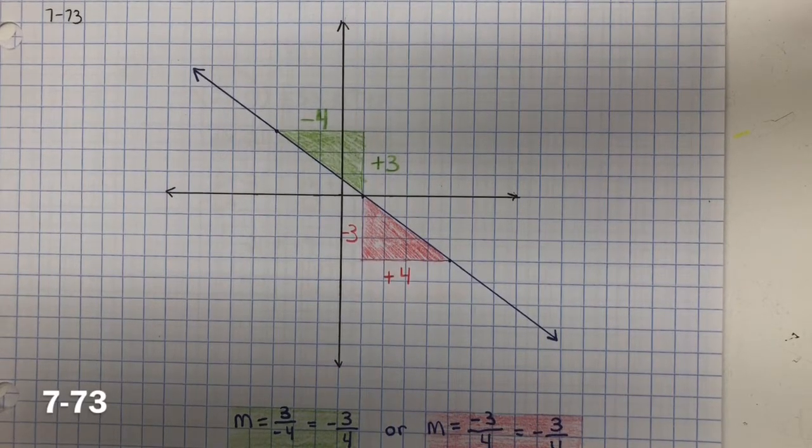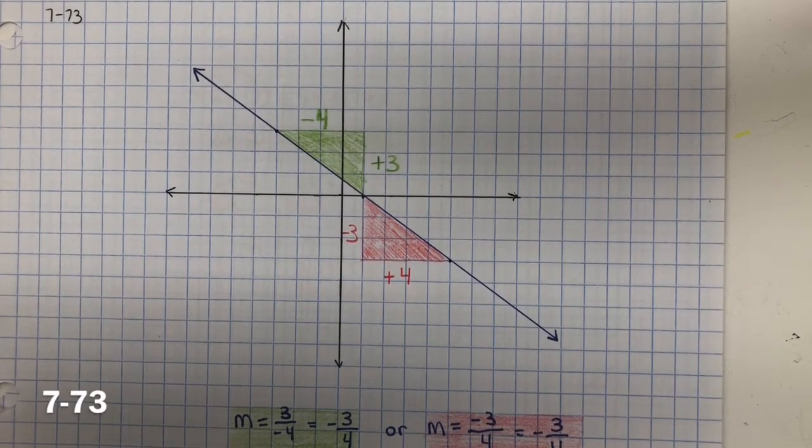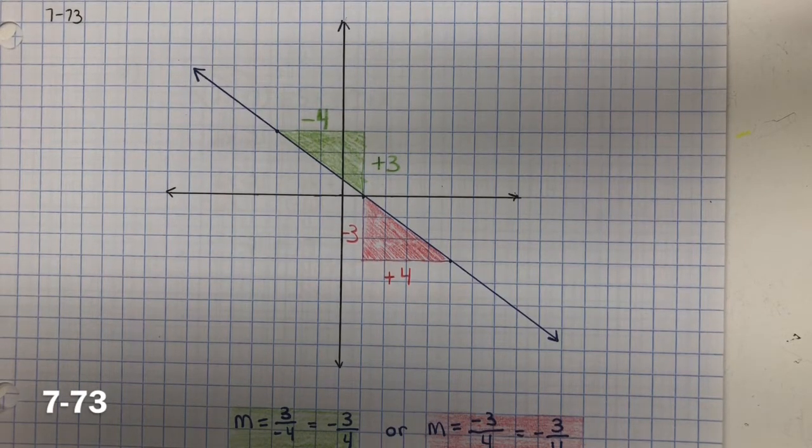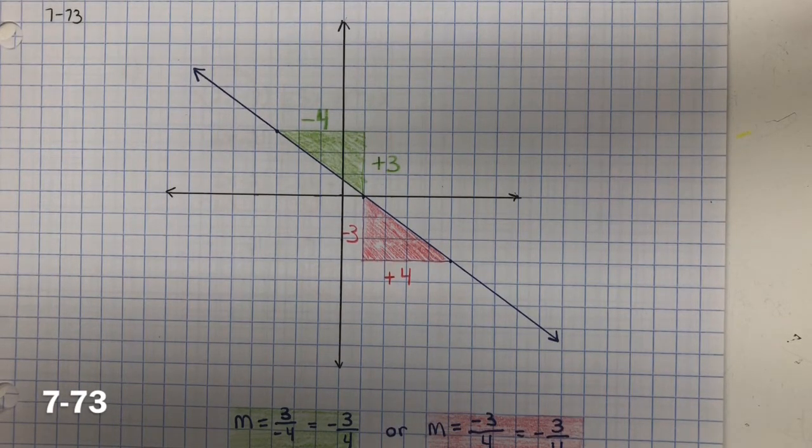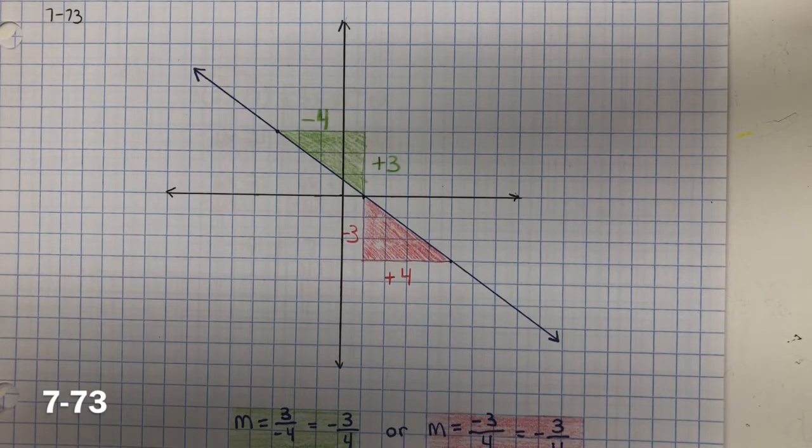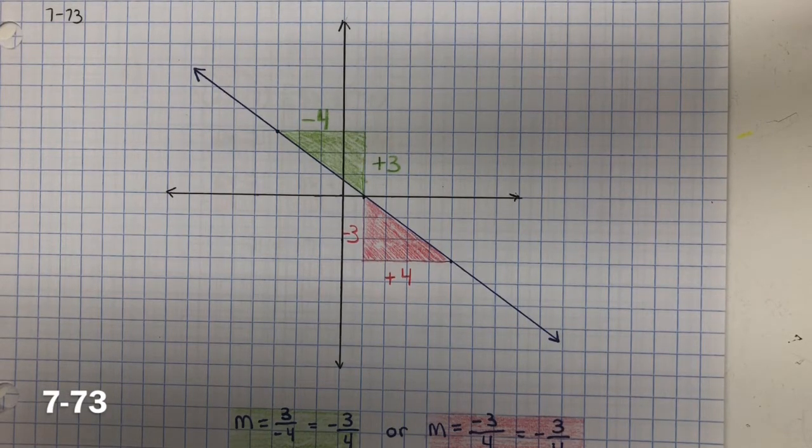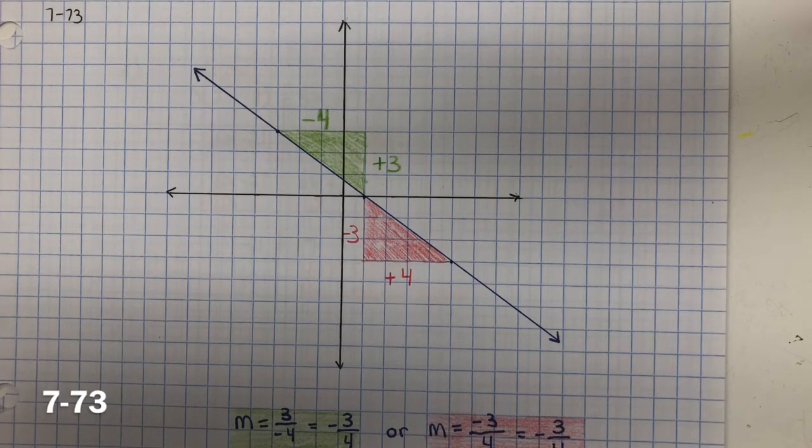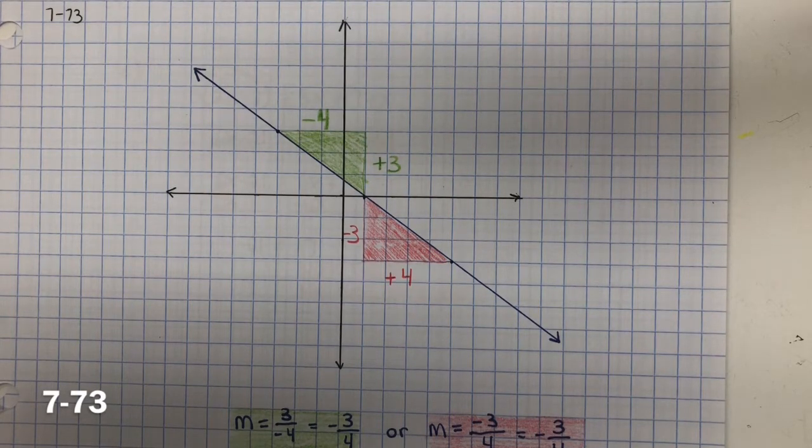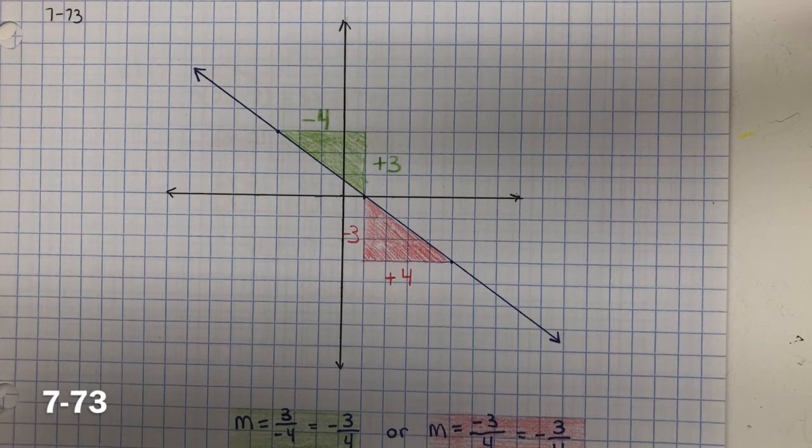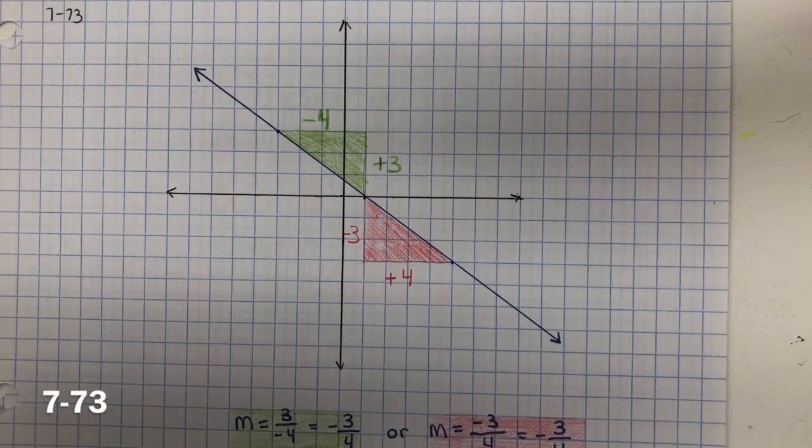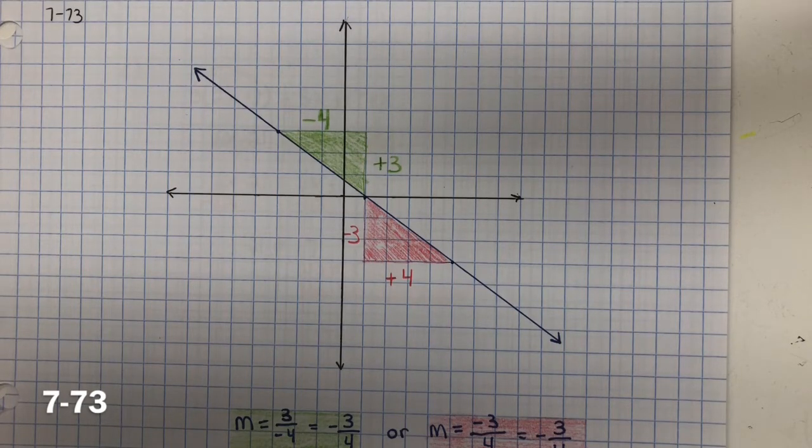In 7-73, Ella and her study team are arguing about the slope of the line in the graph at right. They've come up with four different answers: positive 3 fourths, negative 4 thirds, negative 3 fourths, and positive 4 thirds. We need to find out which slope is correct.